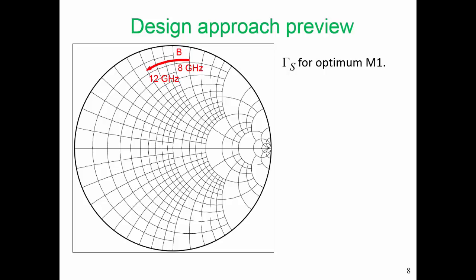Recall that curve B is Gamma S for optimum M1. That Gamma S shown there is S11 conjugate. So provided that S12 is very small, Gamma S, which is equal to Gamma in conjugate, is also equal to S11 conjugate because Gamma in and S11 will be very, very close.